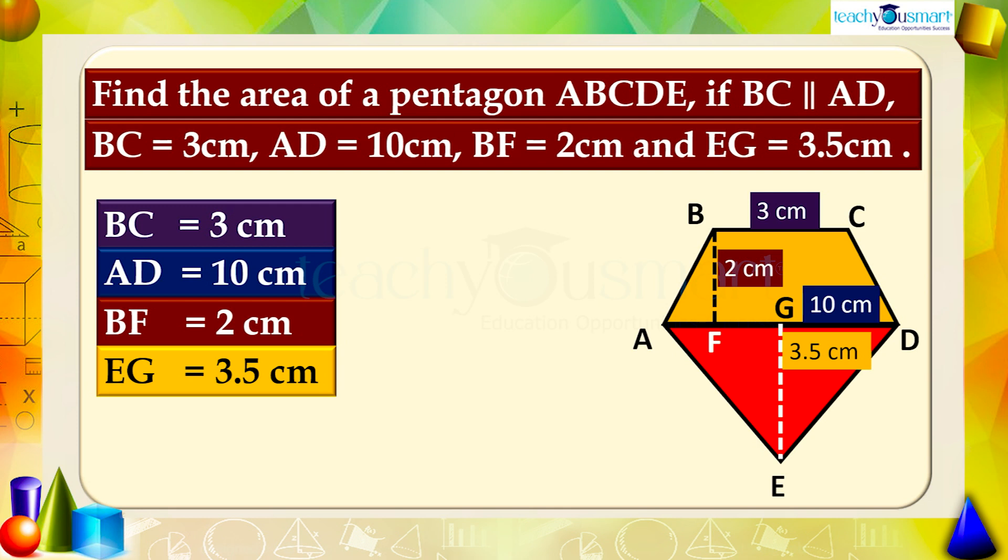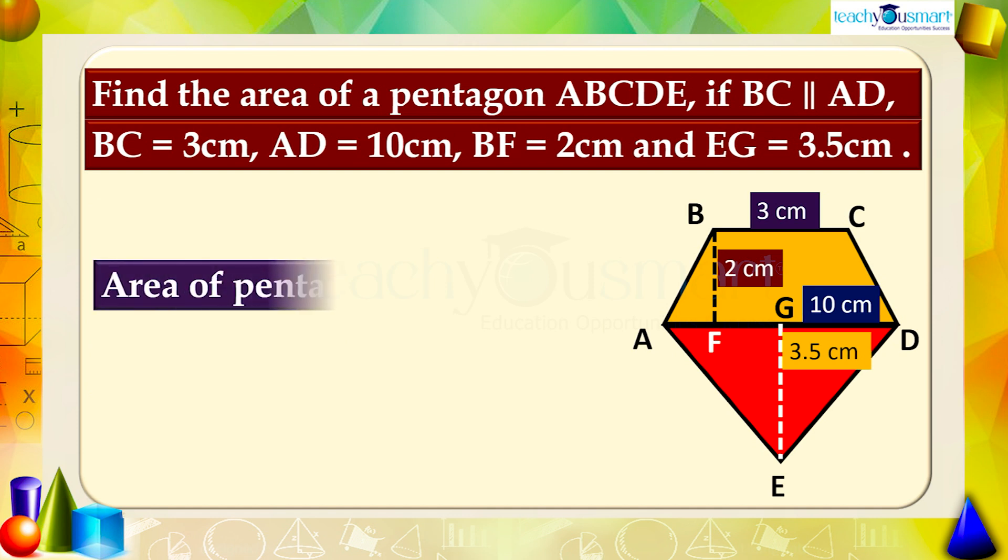In the pentagon ABCDE, BC is parallel to AD, so ABCD is a trapezium. Now we get a trapezium ABCD and triangle ADE. Then the area of pentagon ABCDE is the sum of the areas of trapezium ABCD and triangle ADE.